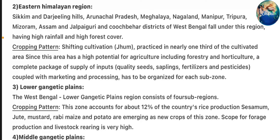Zone 2 – Eastern Himalayan Region: This covers Sikkim and Darjeeling hills, Arunachal Pradesh, Meghalaya, Nagaland, Manipur, Tripura, Mizoram, Assam, and Jalpaiguri and Koch Bihar districts of West Bengal, having high rainfall and high forest cover. Cropping pattern: shifting cultivation (Jhum) is practiced in nearly one-third of cultivated areas. Since this area has high potential for agriculture including forestry and horticulture, a complete package of supply of inputs, quality seeds, saplings, fertilizers, and pesticides, coupled with marketing and processing, has to be organized for each sub-zone.